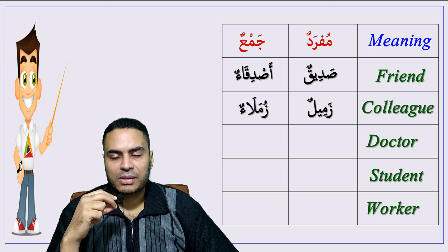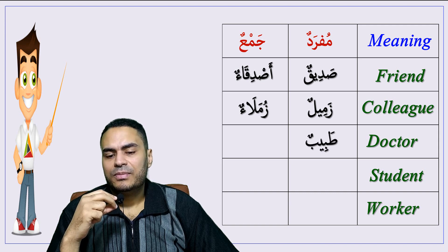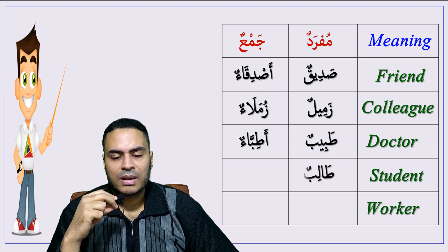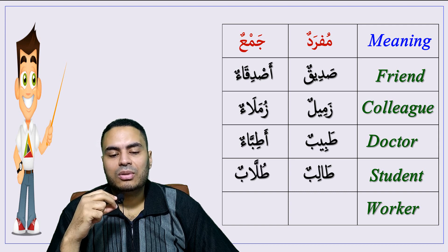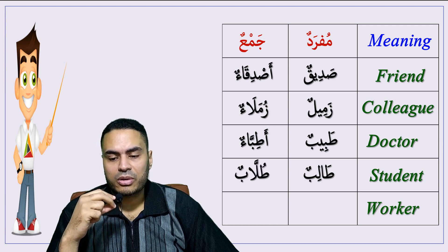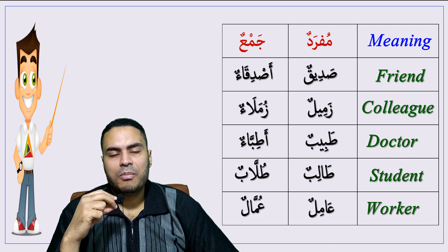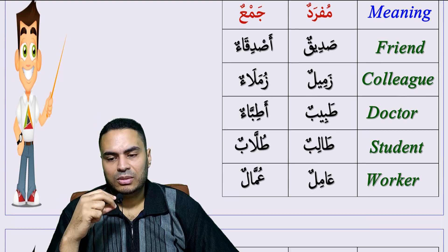Doctor — tabibun, plural: atibba'. Students — talibun, plural: tullab. Worker — 'amilun, plural: 'ummal.